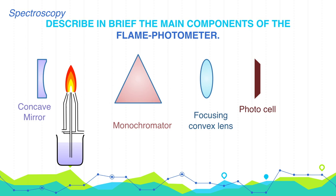And finally, there is readout meter. This meter gives us directly the intensity of radiation which is emitted by the excited atoms when they return to the ground state.